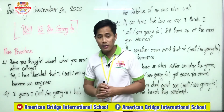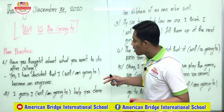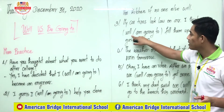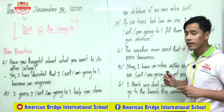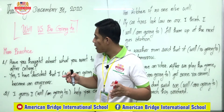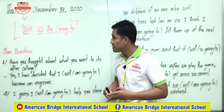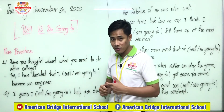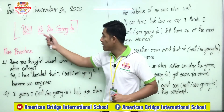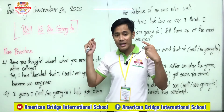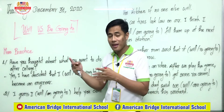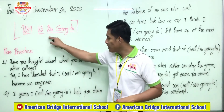Thank you so much. Now we have six sentences and I want you to select the correct words — 'will' or 'be going to' — in each sentence. To do this, you have to make sure you understand the difference. 'Be going to' means we have decided to do something in the future. 'Will' — we decide at the time of speaking that we want to do something in the future.